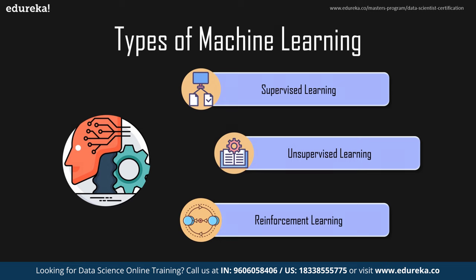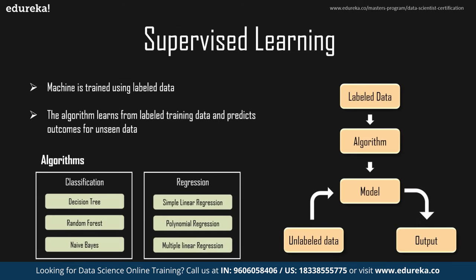In supervised learning, we train our machine using labeled data. It can be compared to learning in the presence of a teacher who already has the answer. The algorithm learns from training data and develops a model that can help predict the outcome of unseen data. There are two major types of algorithms under supervised learning: classification algorithms and regression algorithms. In classification, a class is predicted for a given input by learning through labels of training data. Algorithms like decision tree, random forest, and Naive Bayes are a few supervised classification algorithms.